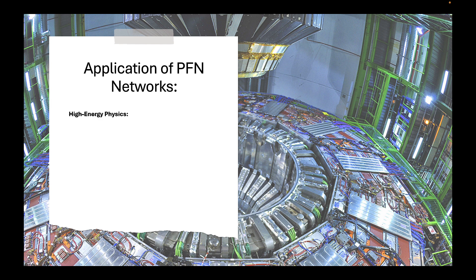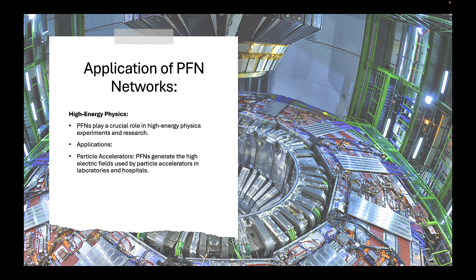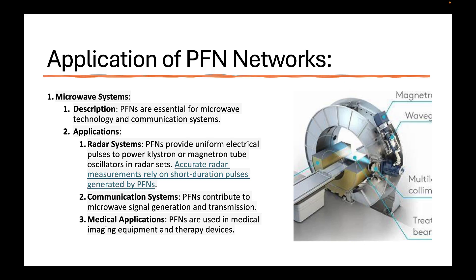What are the applications of the PFN? It has many applications, but the most significant is in high energy physics. PFNs play a crucial role in experiments like particle accelerators, plasma confinement devices for fusion research, and pulsed lasers for scientific and industrial purposes. It also has applications in microwave systems, where it's essential for microwave technology and communication systems. In radar systems, it provides uniform electrical pulses to power thyratron or magnetron tube oscillations, and can contribute to microwave signal generation. In medical applications, it's used in medical imaging equipment and therapy devices.